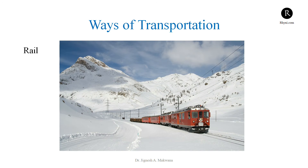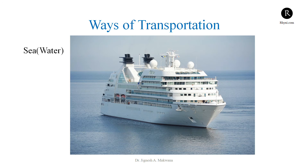Then rail — train, tram — these all use the rail as a way of transportation, so this is also one type of vehicle. Vehicles that use the road for transportation, that use the rail for transportation, are available, and we are also aware about vehicles that use the sea or water for transportation.